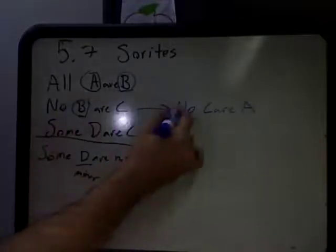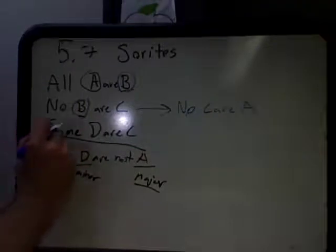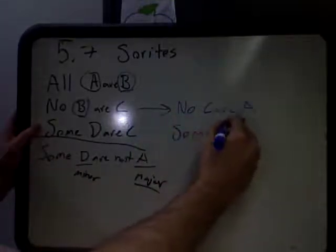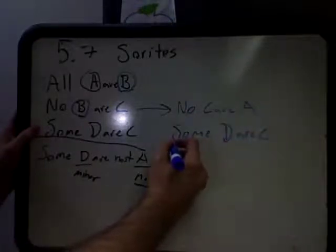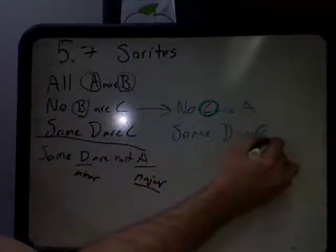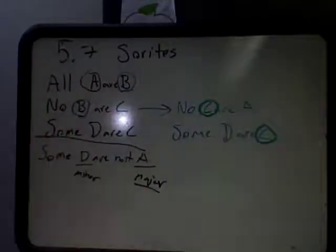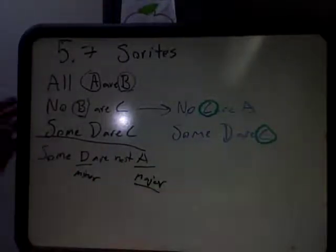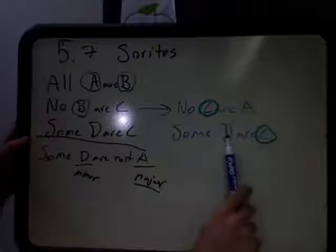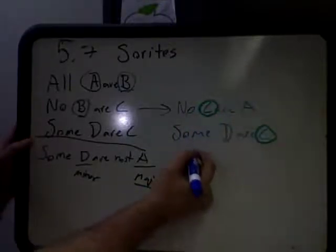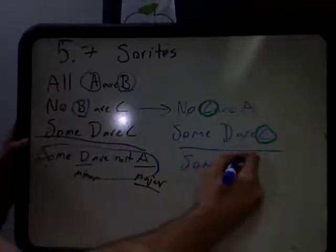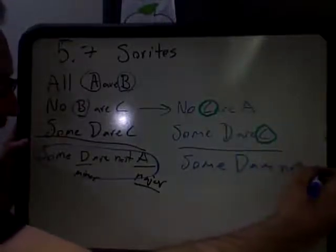So this conclusion is now going to function as the first premise for the next argument. We might want to slide it over, where we have Some D or C. Here C is our middle term, D is going to be our major term, and A is going to be our minor term. Since we have a particular, we know that our conclusion has to be particular as well. In fact, it's the same conclusion we have at the end. We conclude: Some D are not A.